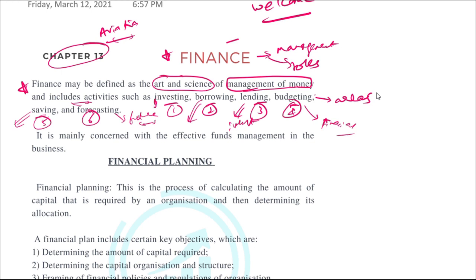Finance is a science because it involves mathematics and statistics, and it is an art because it is carried out by humans and there is no straightforward answer to how to invest or save money — just like management itself.